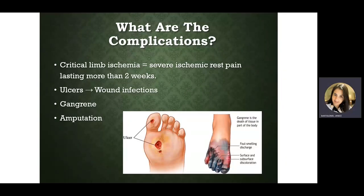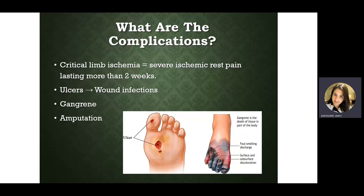The problem with PAD is that lack of circulation and blood flow does not deliver oxygen and nutrients to the tissue, making patients very prone to ulcers and wounds, and in the worst case, amputation. They also develop critical limb ischemia — severe ischemic events of the leg at rest lasting more than two weeks. A typical patient might present to the ER with a non-healing wound for days, with risk factors like obesity, diabetes, hypertension, and high cholesterol.